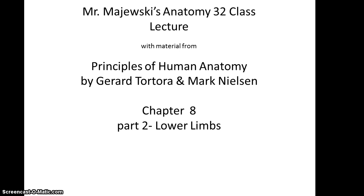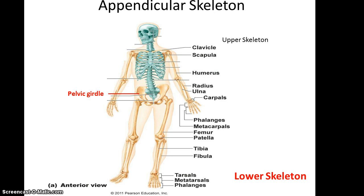Mr. Majewski's anatomy 32 class lecture, chapter 8 part 2: lower limbs. We're now going to talk about the lower skeleton, specifically the appendicular skeleton. The pelvic girdle is what attaches the appendicular skeleton to the axial skeleton.